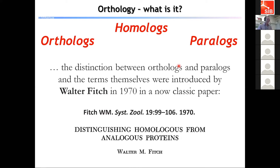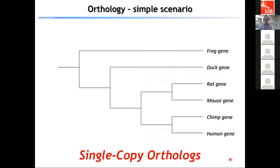A century later, Walter Fitch, in a classic paper in the sequence era, began to really define the terms orthologs and paralogs. With protein sequences and sequence alignments, he could see how relationships between different sequences match up to our understanding of relationships between the animals they come from. The distinction between orthologs and paralogs was first introduced by Walter Fitch in 1970. Now I want to walk through a very simple scenario using a tree to describe inheritance from a last common ancestor.